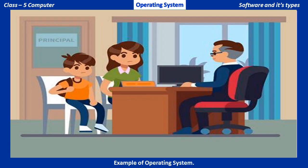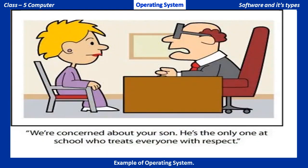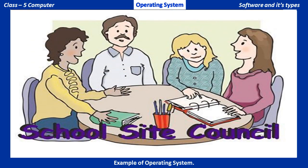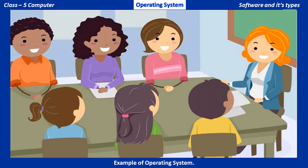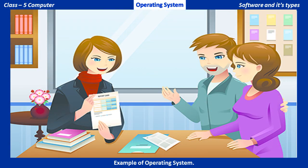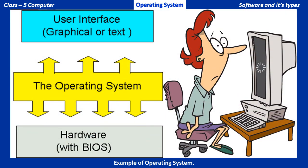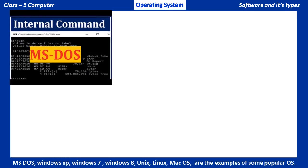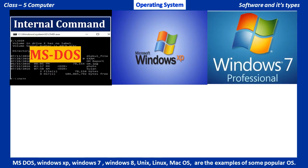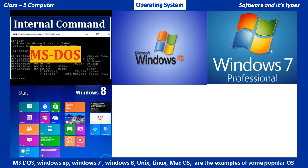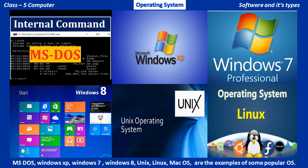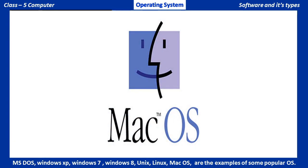An operating system works like the principal of your school. The principal has various responsibilities to manage the school, like supervising the students, teachers, and workers, maintaining discipline, setting examination schedule, timetable, curriculum, and attending to parents and visitors. In the same way, an operating system performs various functions to manage the working of a computer. MS-DOS, Windows XP, Windows 7, Windows 8, Unix, Linux, and Mac OS are examples of some popular operating systems.